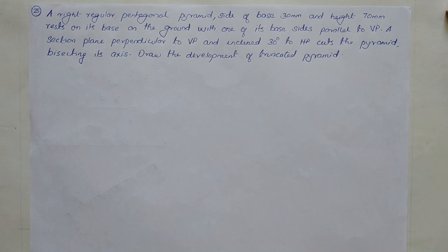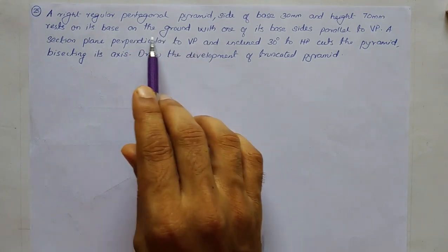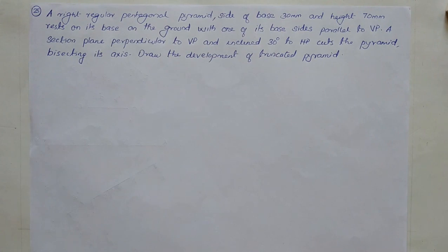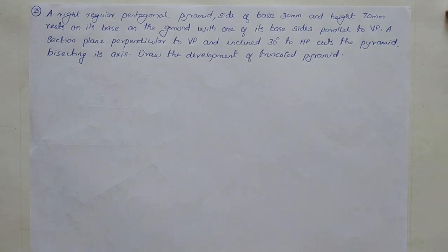In this case we are having a pentagonal pyramid resting on the ground, which means resting on the horizontal plane itself, resting on its base. When drawing the simple front view and simple top view, the base shape — that is the pentagonal shape — will be in the top view, as it is resting on the horizontal plane, and the outline of the front view will be a triangle.